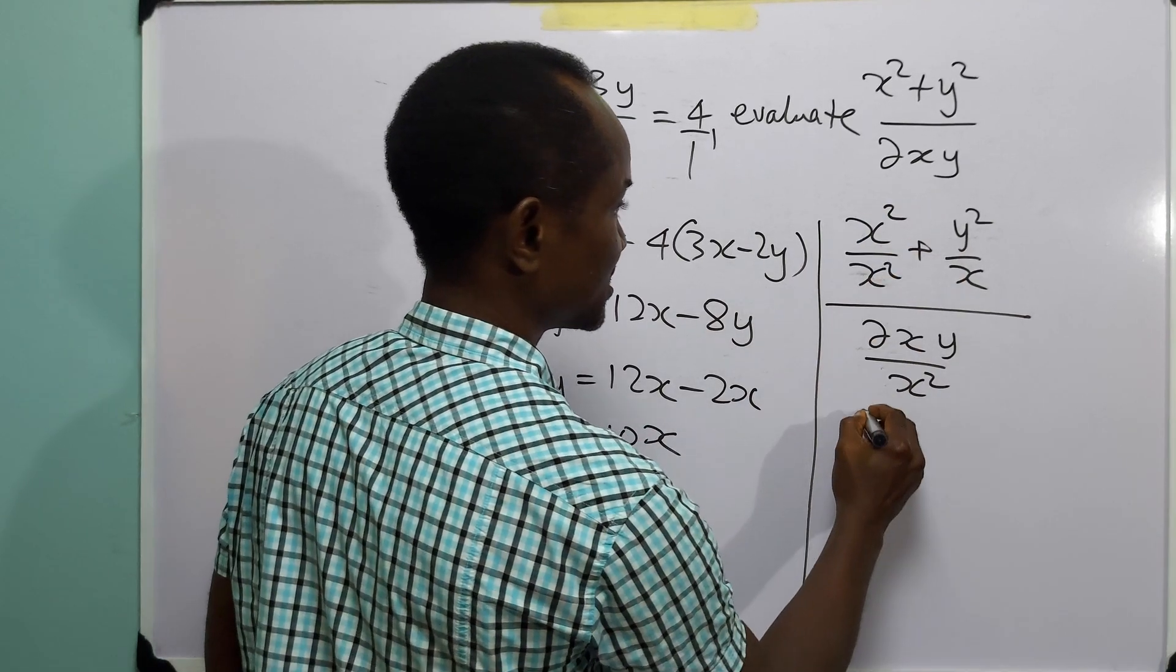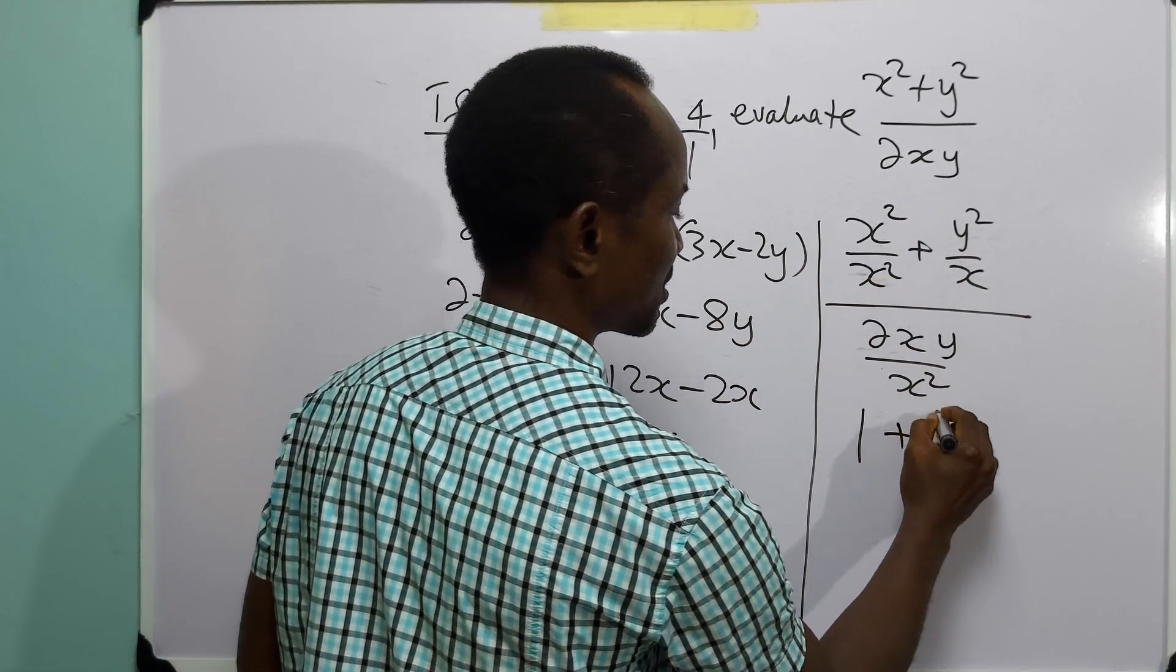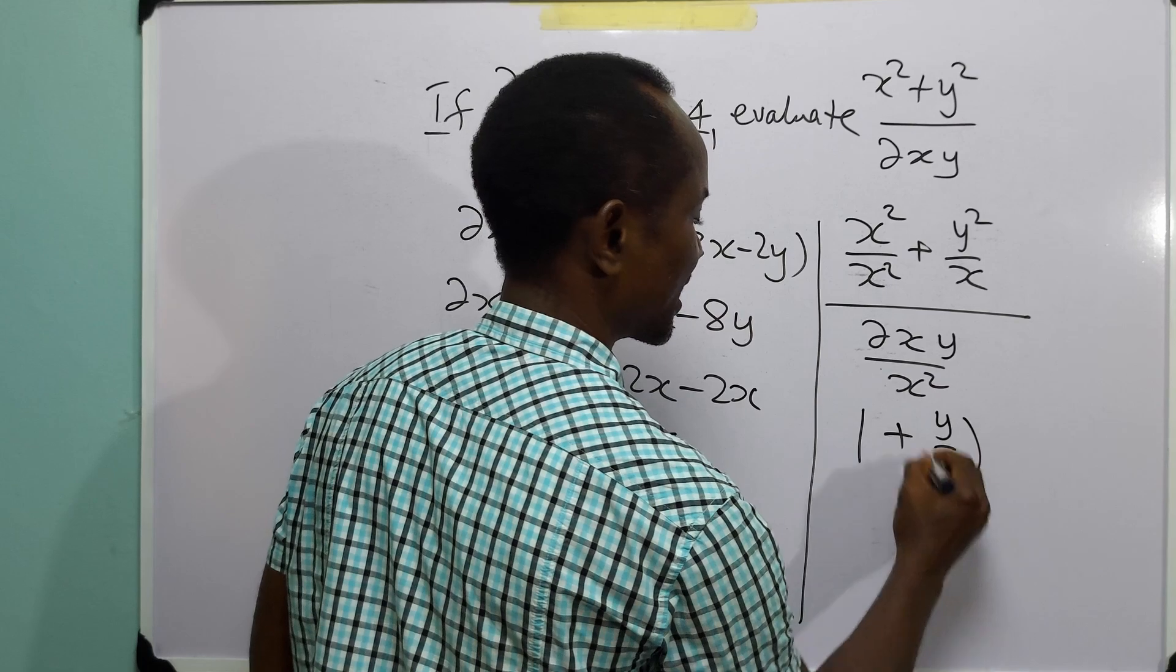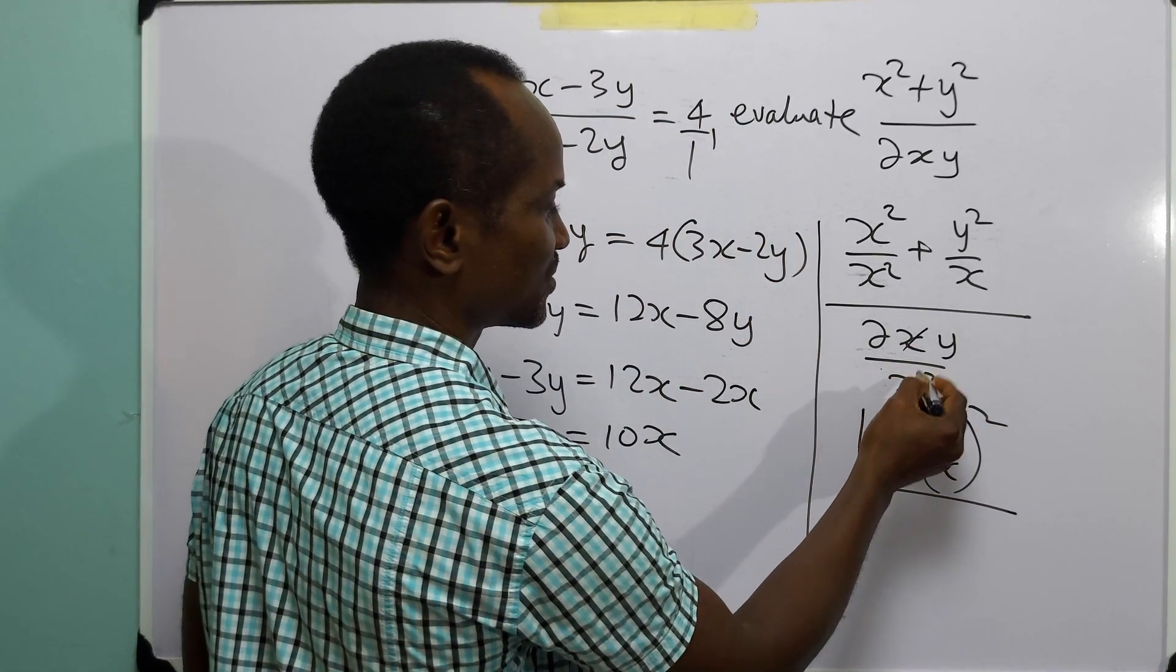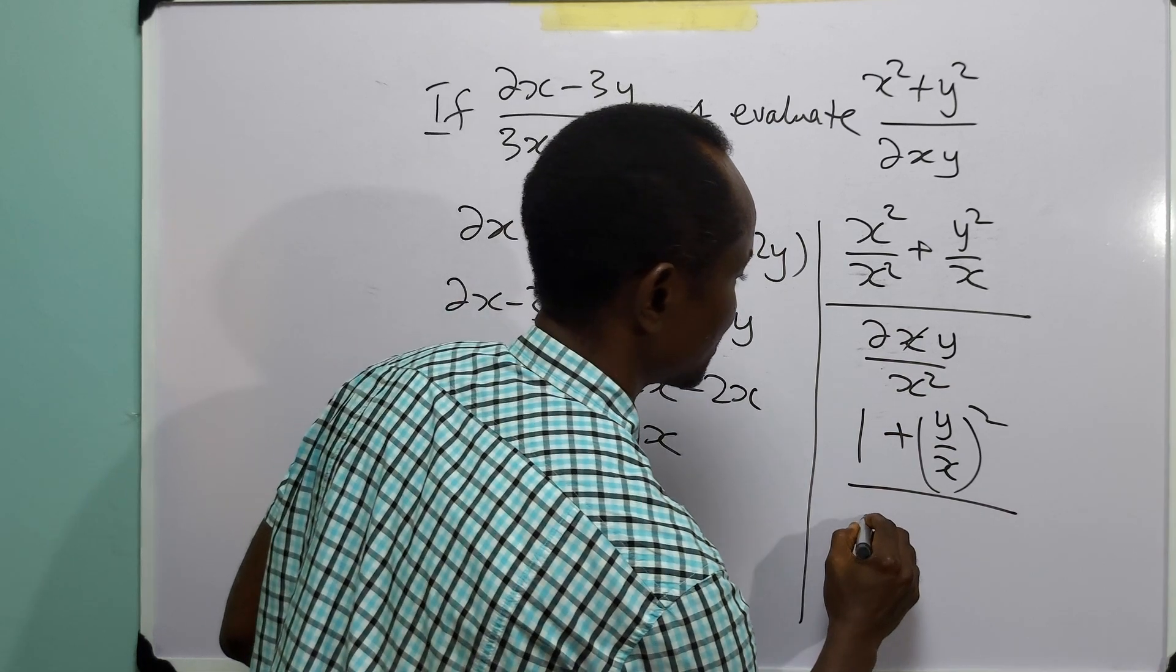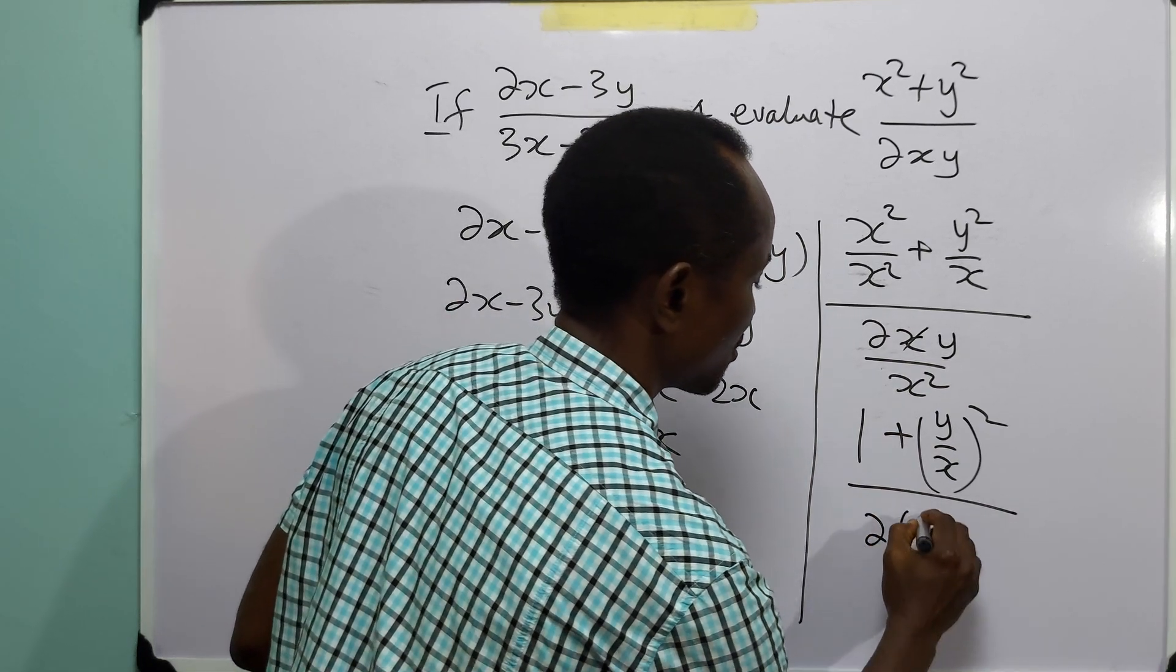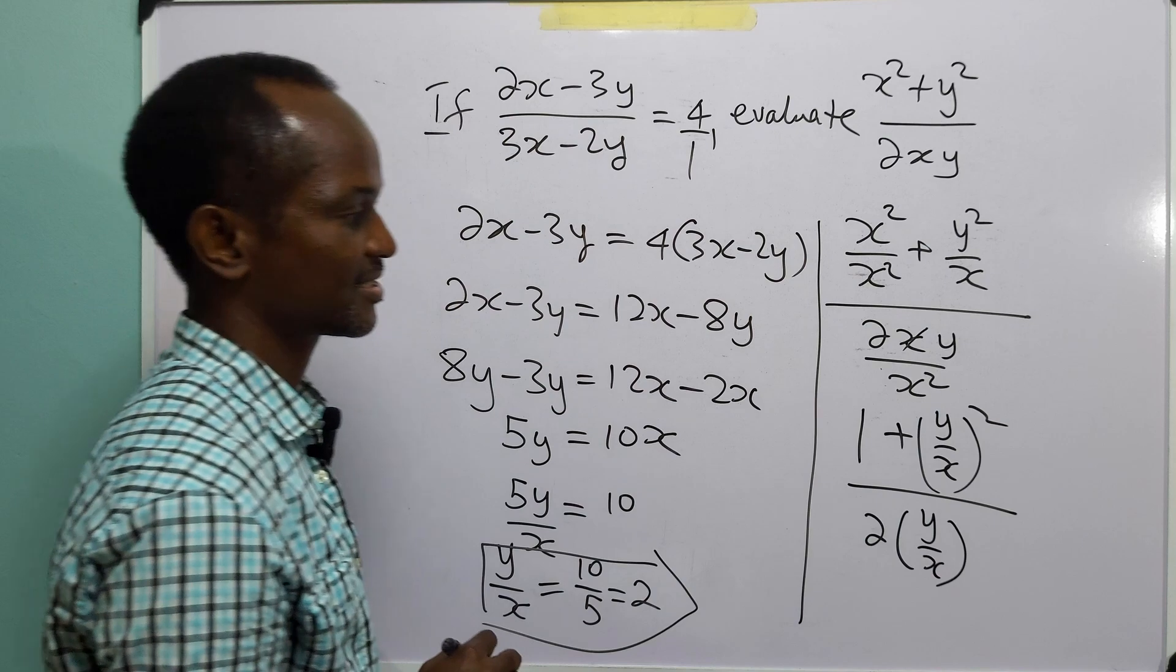So here we have that this is 1 plus y over x squared, divided by, now x will divide to leave you with 2y over x.